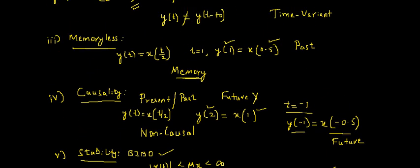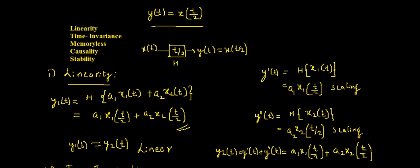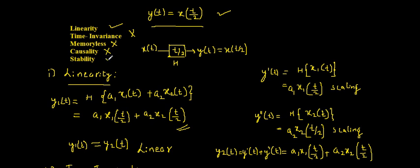To summarize, for the system y(t) = x(t/2): it is linear (yes), time variant (not time invariant), has memory (not memoryless), is non-causal, and is BIBO stable. This covers all five properties of the system. Thanks for watching.